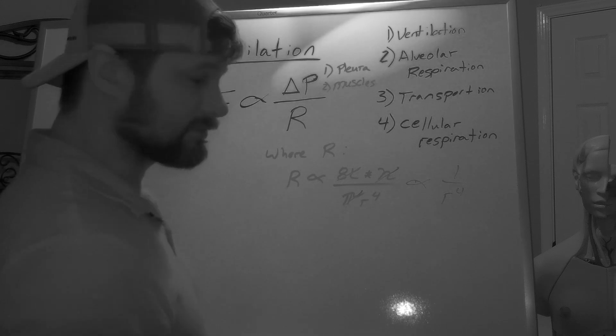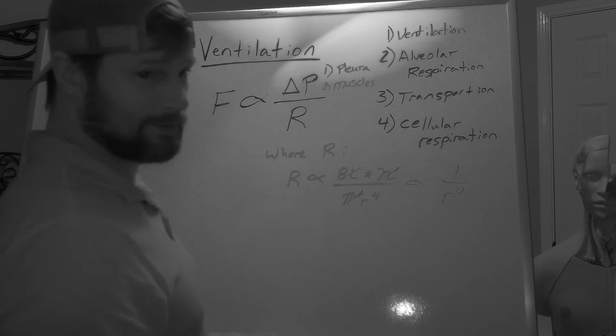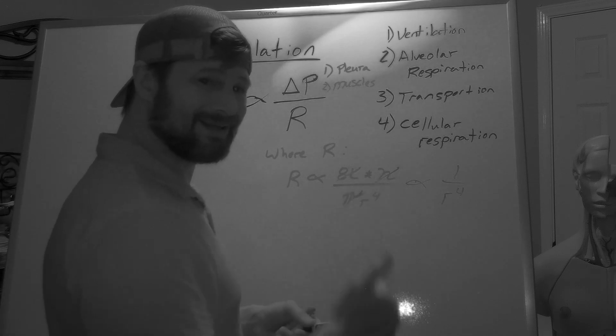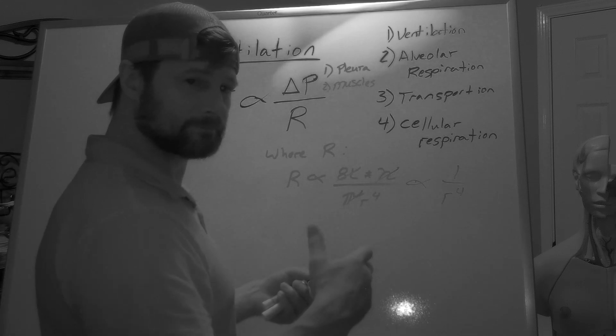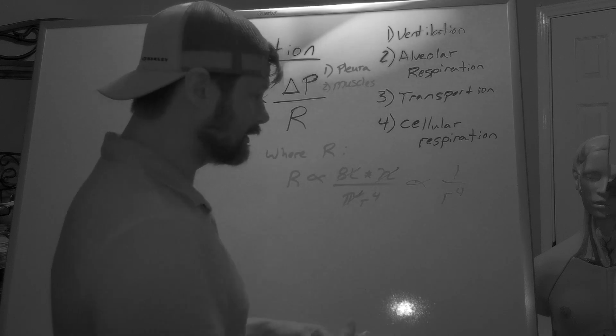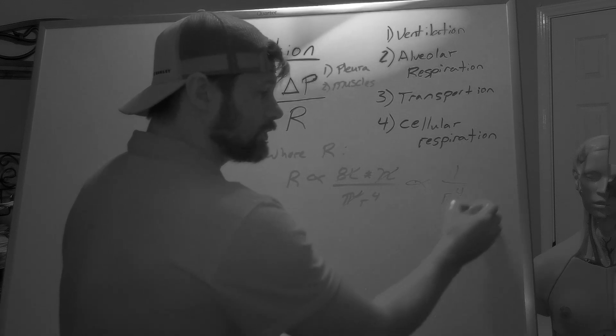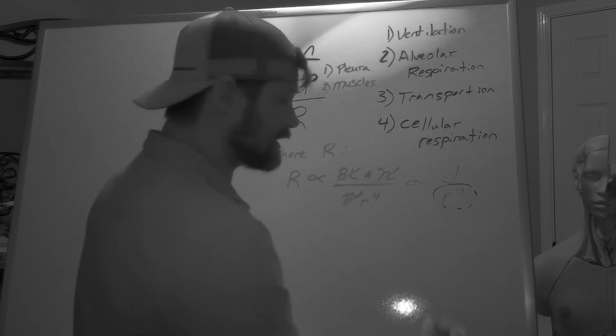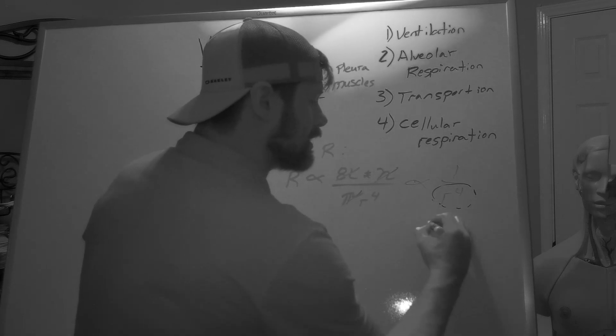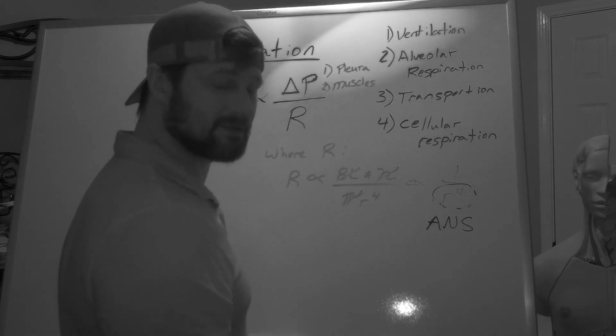How do we change the diameter of tubes in the human body? Smooth muscle. And what is smooth muscle? It's an involuntary muscle. Which nervous system controls involuntary actions of the human body? The autonomic nervous system. So what controls this? The primary factor in everyday life is the autonomic nervous system. The parasympathetic and the sympathetic nervous systems.